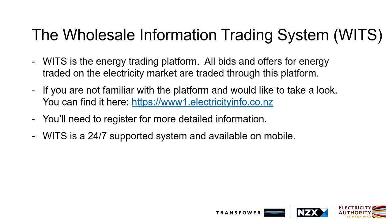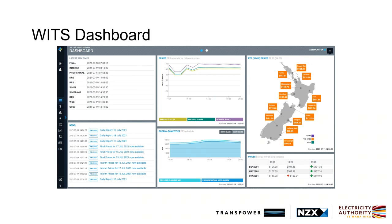The next couple of slides show some of the data that is displayed on the WITS dashboard. The dashboard is the entry page for WITS. There are two dashboard pages with an autoplay function to automatically toggle between each page. Alternatively, autoplay can be turned off and users can manually switch between dashboards. On this page, in the center of the dashboard, you can find the prices line chart for key reference nodes.